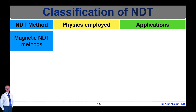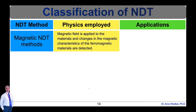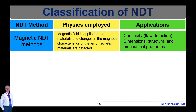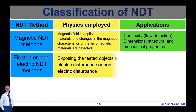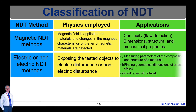Next is the magnetic entity method, in which a magnetic field is applied to the materials and changes in magnetic characteristics of ferromagnetic materials are detected. With this method, continuity or flaw detection, dimensions, and structural and mechanical properties can be tested. Next is electric or non-electric entity methods, in which the tested object is exposed to electric or non-electric disturbance. By using this method, measuring parameters of the composition and structure of a material, finding geometrical dimensions, and finding moisture level can be done.